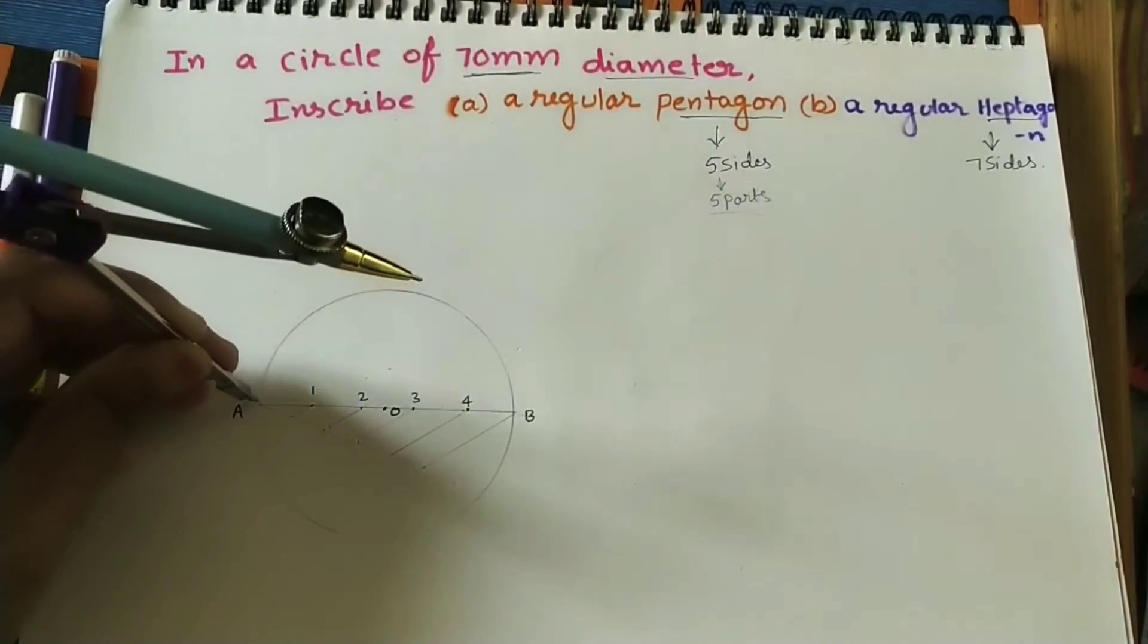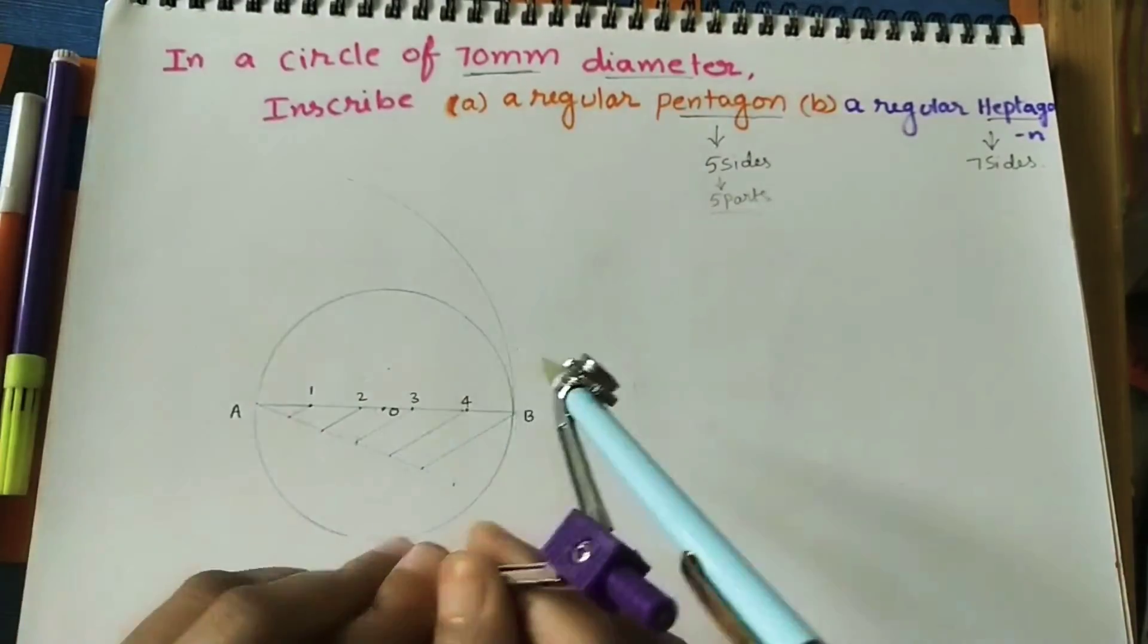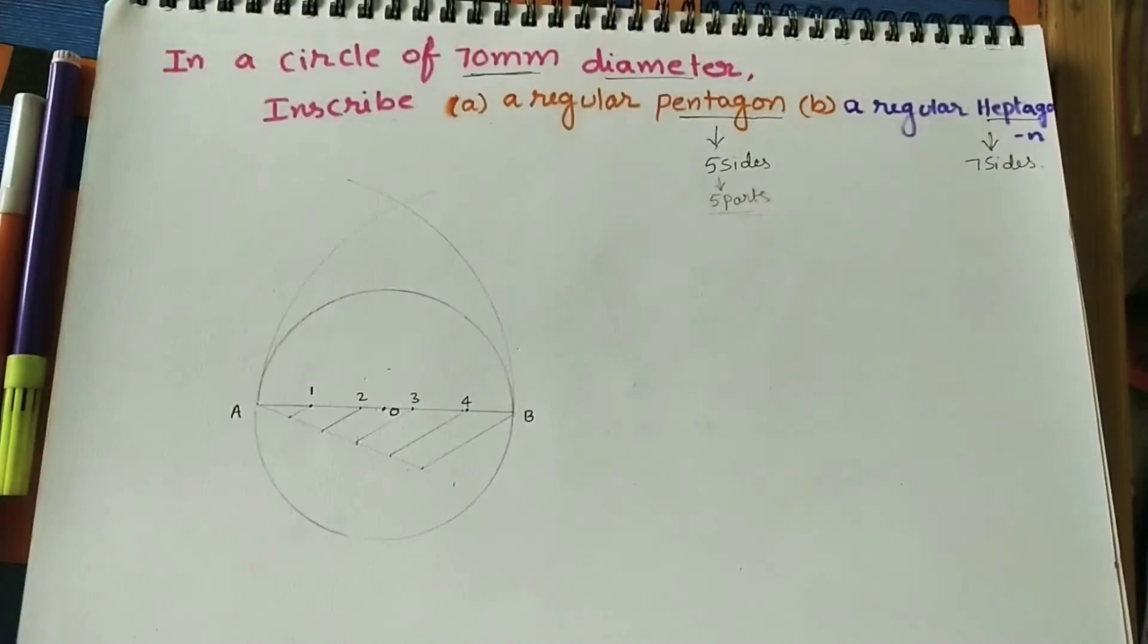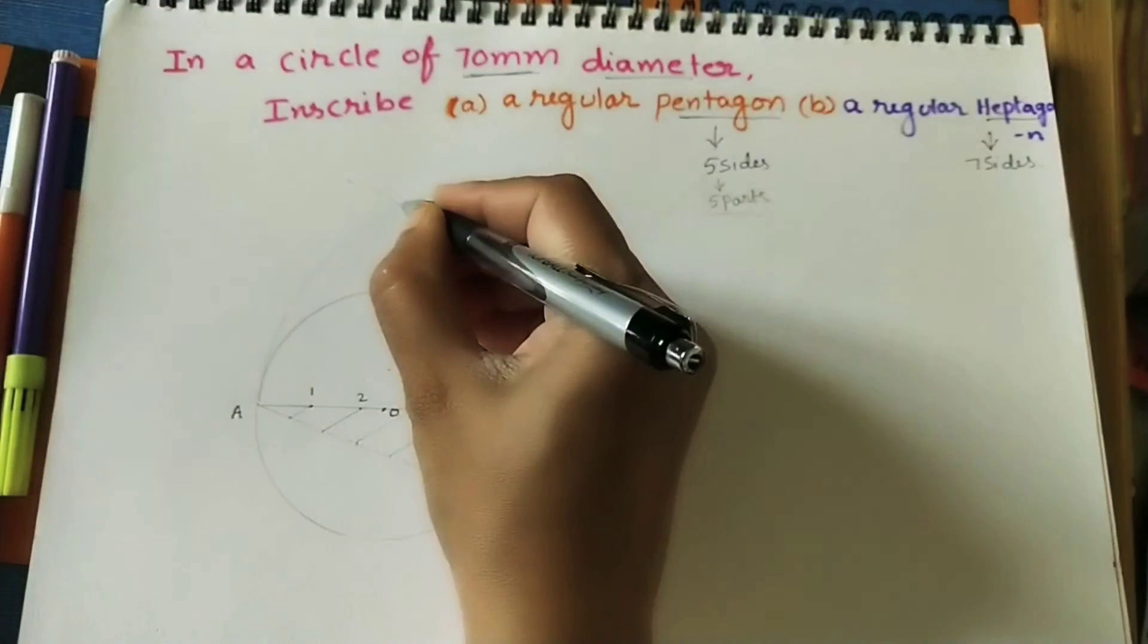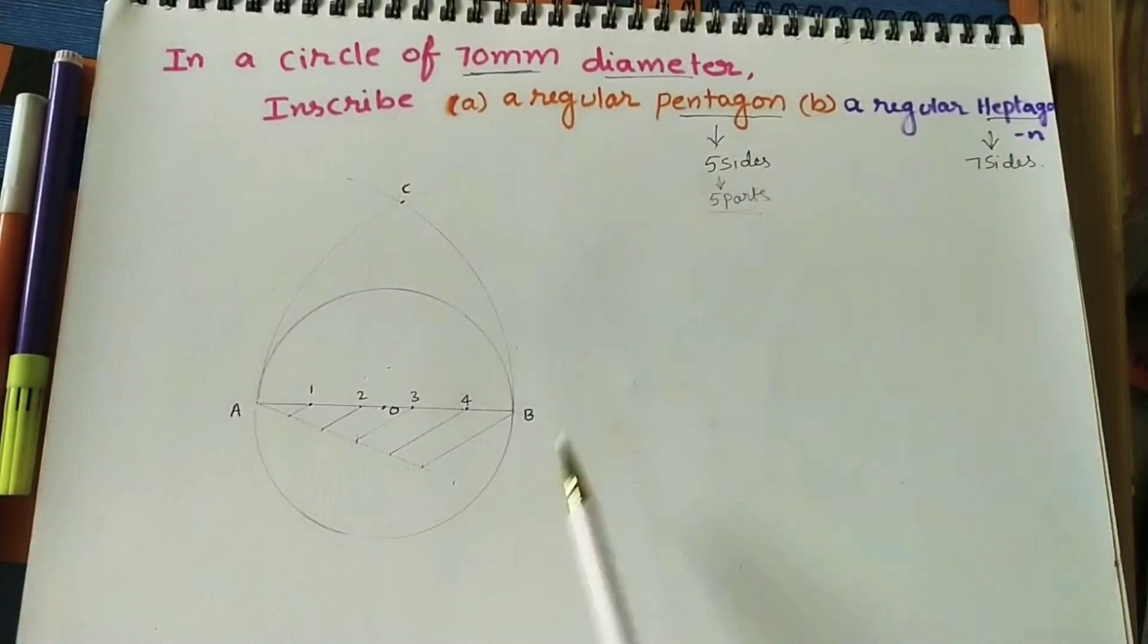A is center. B is radius. We should do an arc here. Same radius. B is center. We should do an arc. The intersection point is C point. All the polygons just join this intersection point and loop.